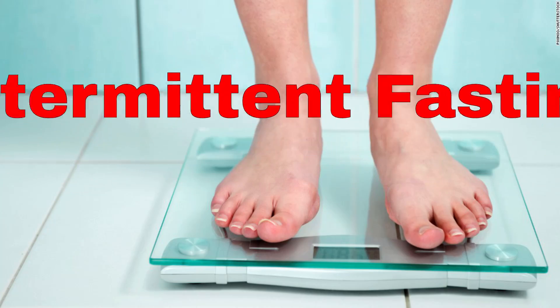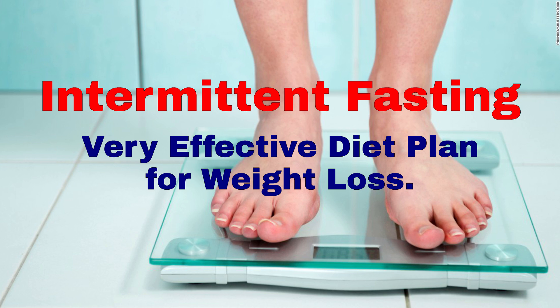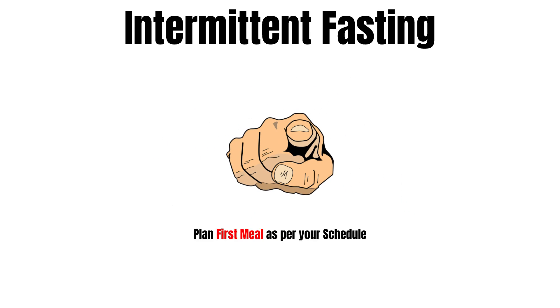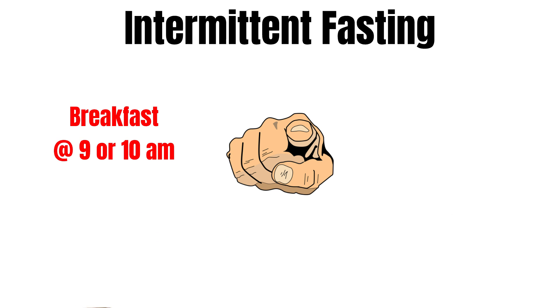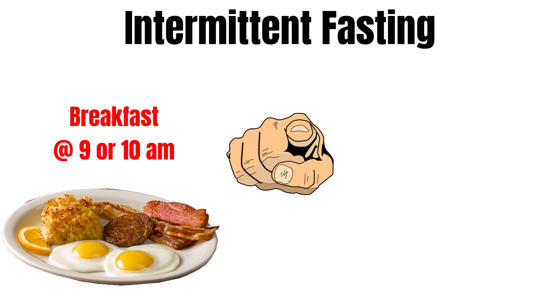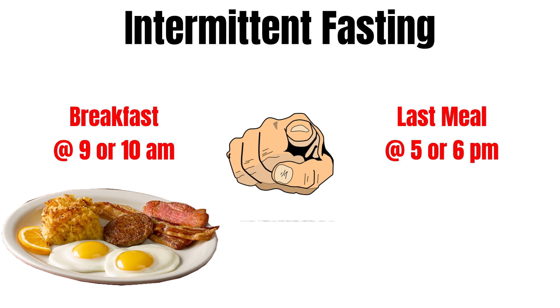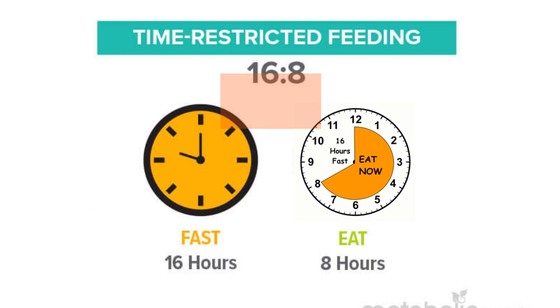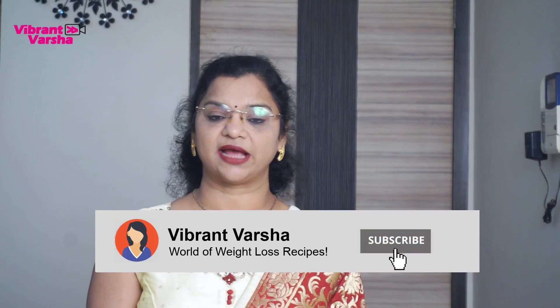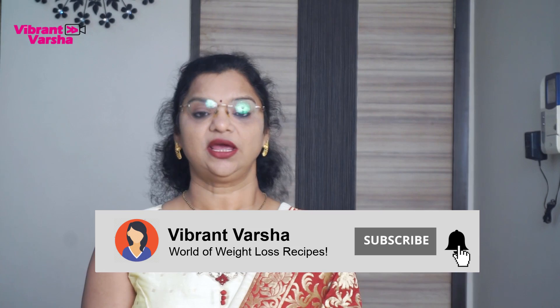You have to do intermittent fasting. When you prepare for the first meal, for example if your first meal is at 9 o'clock, then you should have started fasting from 5 o'clock. If your first meal is at 10 o'clock, then you should have started from 6 o'clock. Because you have to fast for 16 hours and eat within an 8-hour window.